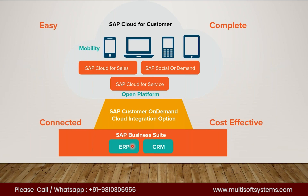If you talk about SAP Business Suite, it's like ERP and CRM. Nowadays, if you are aware of the market, we have the S/4HANA system. ECC is no longer in use. We have SAP CRM and SAP S/4HANA. CRM was initially introduced as a connector but is now merged with S/4HANA. You can consider it an ERP or CRM solution as part of SAP Business Suite, integrated with our C4C solution.